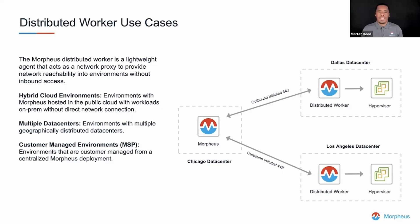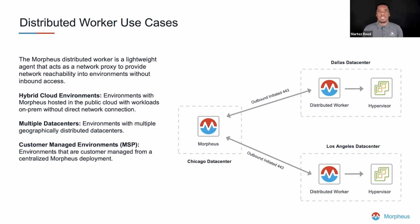From that point, that will enable bidirectional communication via a WebSocket to facilitate various operations that the Morpheus platform supports, such as integrating with various hypervisors and deploying workloads into those environments. One key area of value to customers is hybrid cloud environments in which a Morpheus instance is hosted in a public cloud and leverages the distributed worker to provide reachability into an on-prem data center.